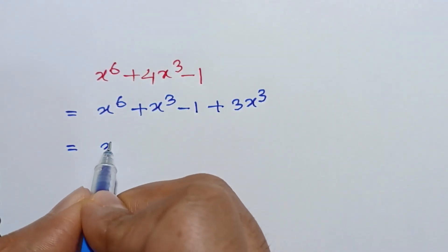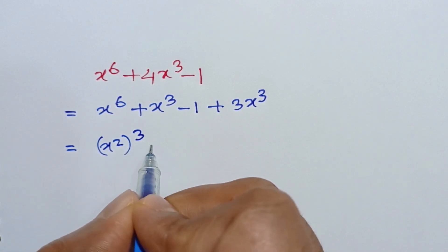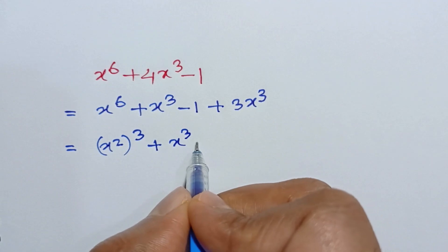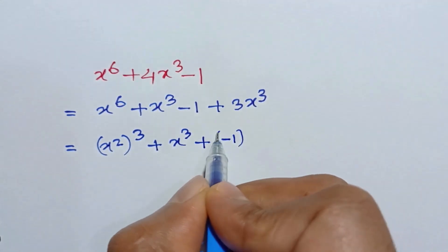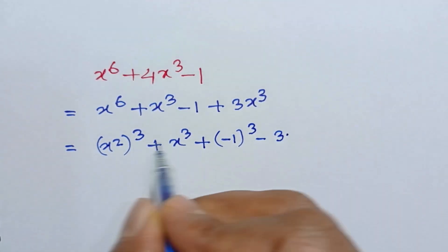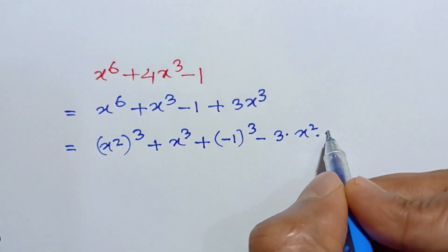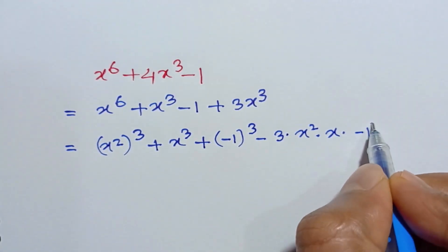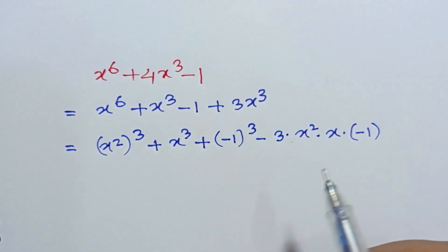So, x squared whole cubed plus x cubed minus 1 whole cubed minus 3 times x squared times x times negative 1, and this is equal to 3x cubed.